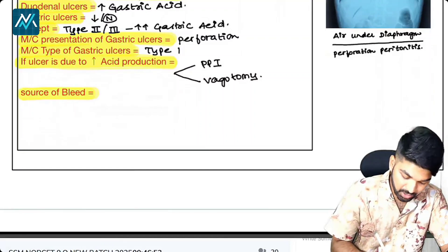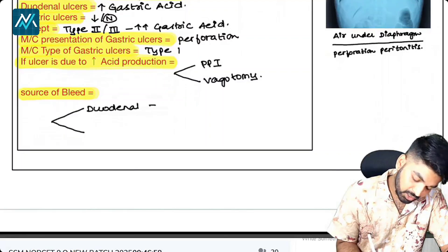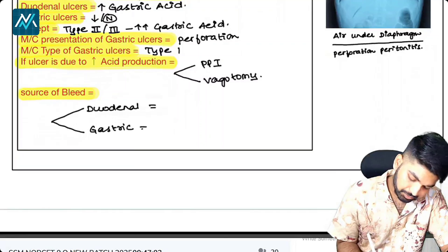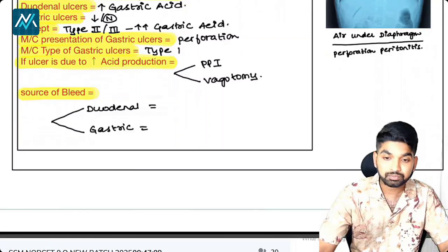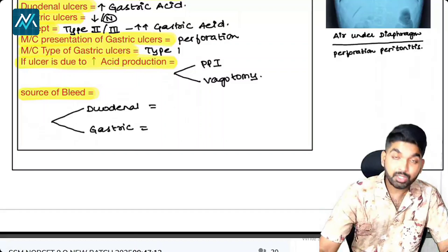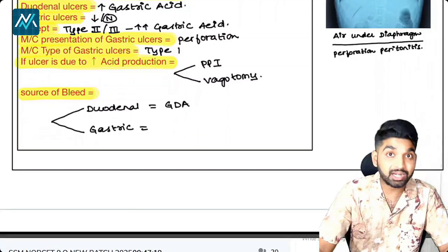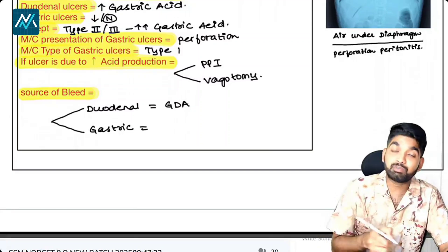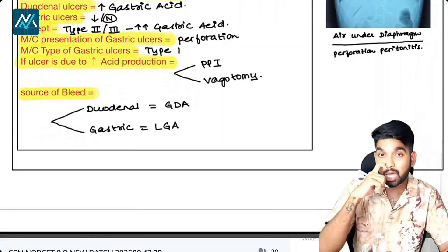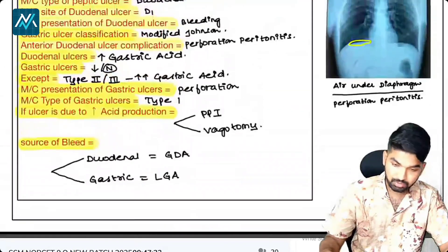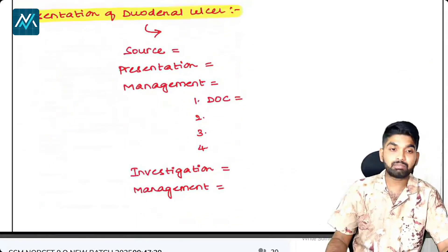Now, what is the source of bleed in both duodenal ulcer and gastric ulcer? For duodenal ulcer, the source of bleed is the GDA — gastroduodenal artery, very important. For gastric ulcer, the source of bleed is the LGA — left gastric artery. Now let us see how patients are going to present.